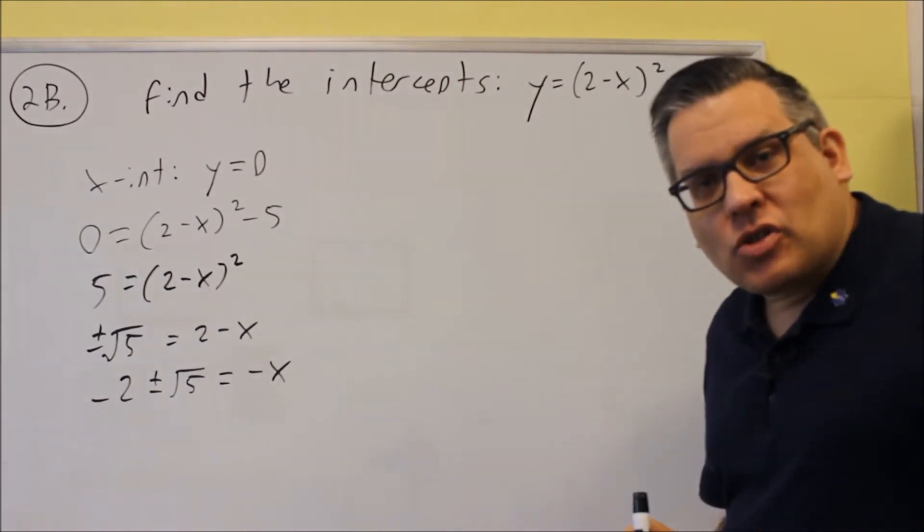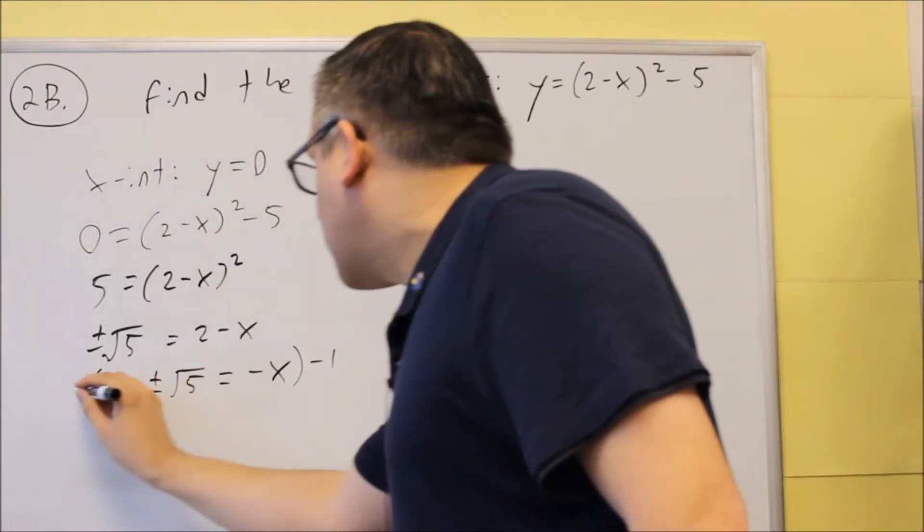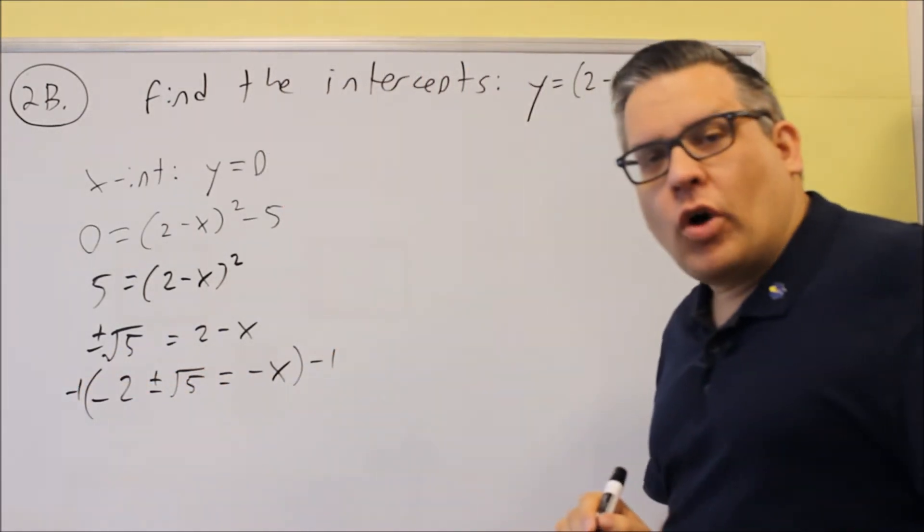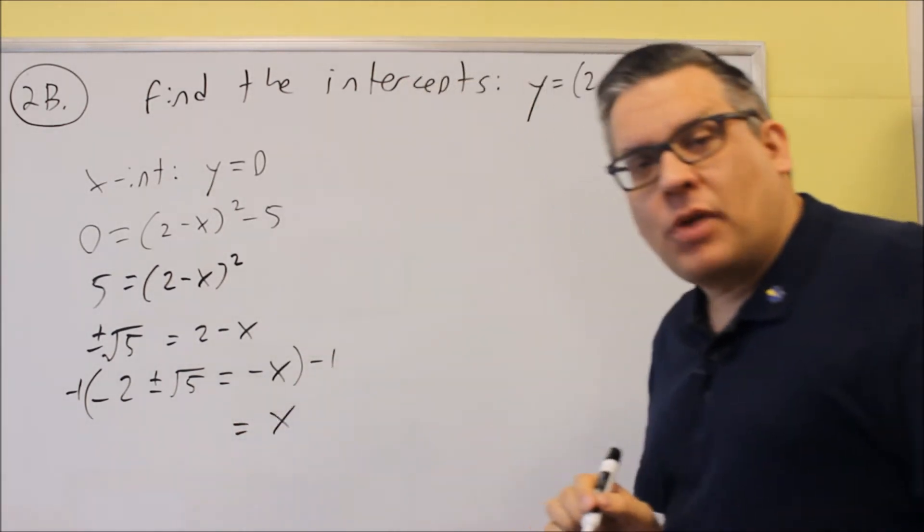So what you can do is you're going to multiply the entire equation, both sides, by negative 1. And we do that because that way we'll be able to get just x by itself.